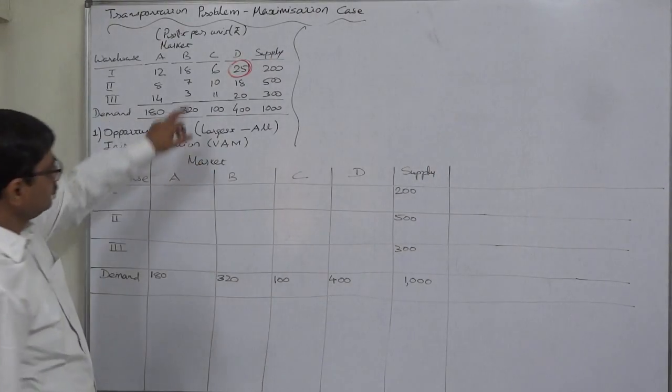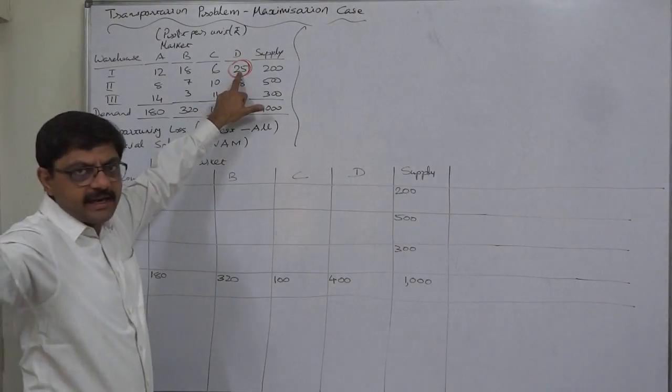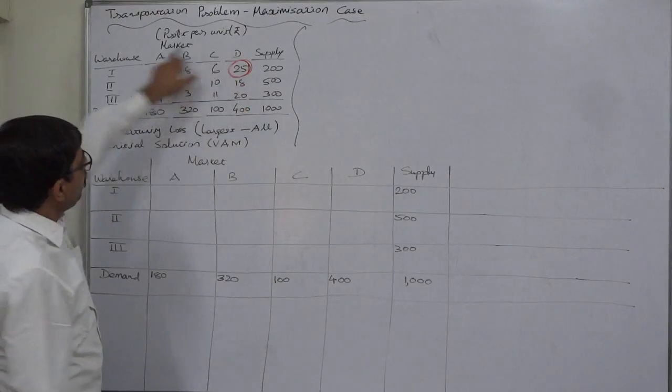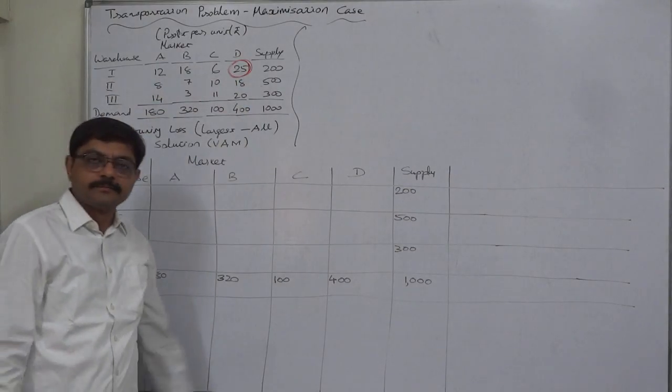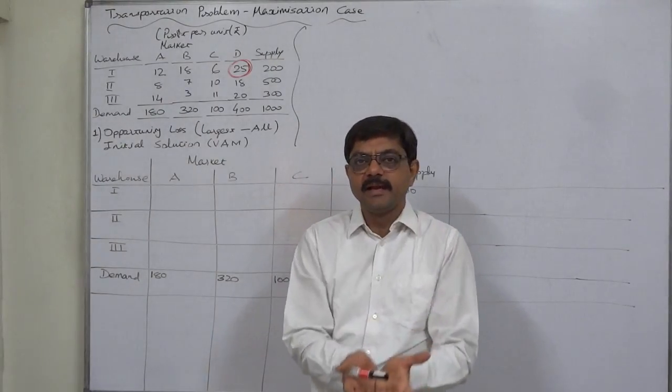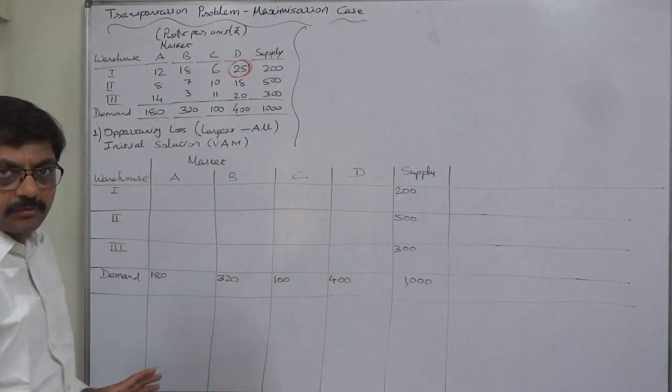What is opportunity loss? From the highest profit, or in case of sales the sales value, or in case of revenue the revenue value, all values are to be subtracted. That's all. The result is opportunity loss, and the transportation problem has now become the problem with minimization objective.